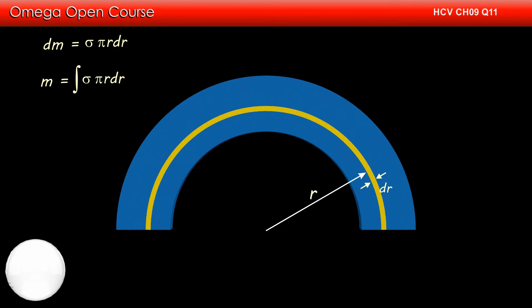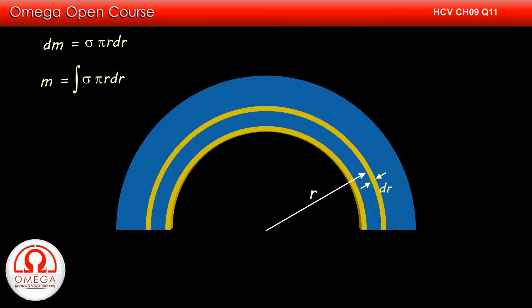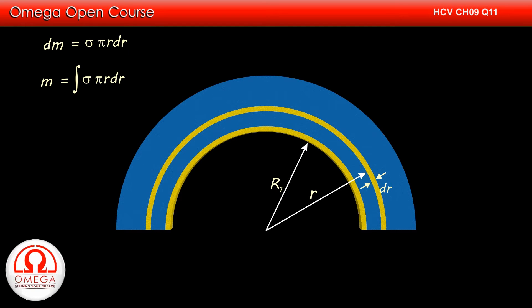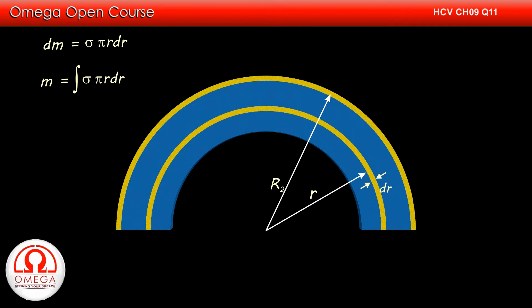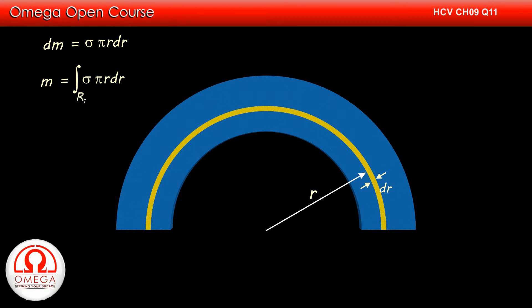While integrating, the value of r should be varied so that all the rings in the plate are covered. As the inner radius of the plate is R1, the radius of the smallest ring is R1. Also, as the outer radius is R2, the radius of the largest ring is R2. So if we vary r from R1 to R2, all the rings in the plate are covered. Hence, the lower limit of the integration must be R1 and the upper limit must be R2.